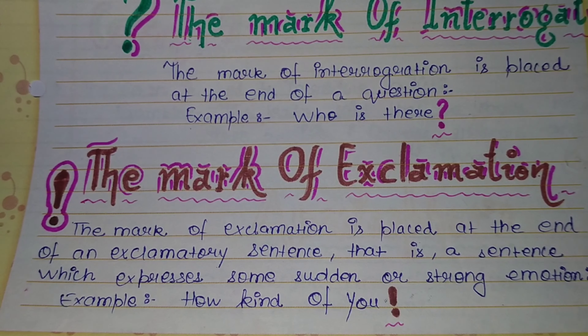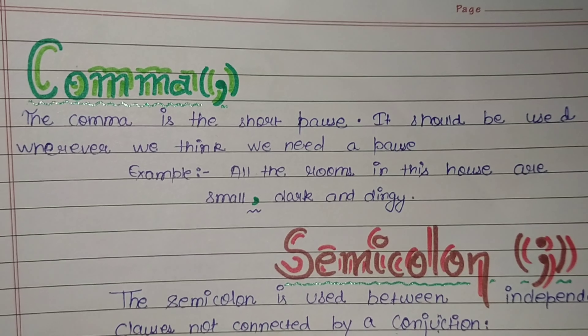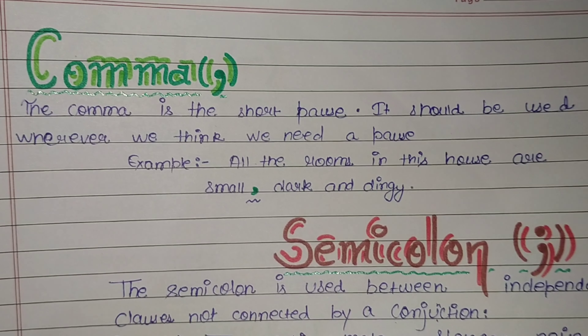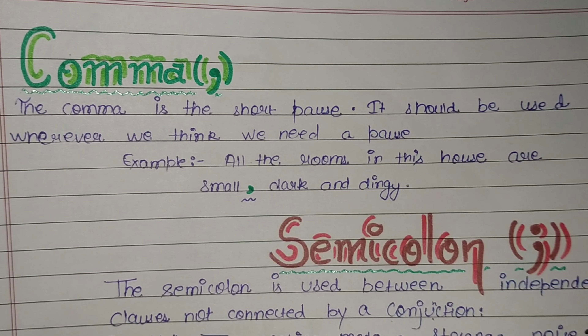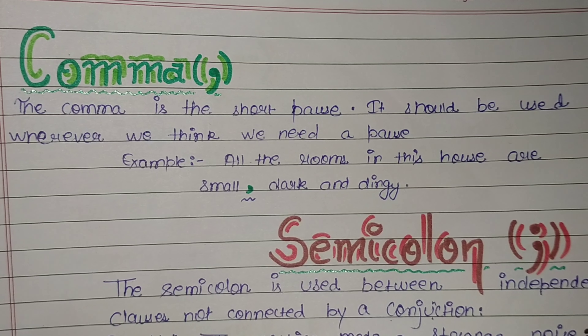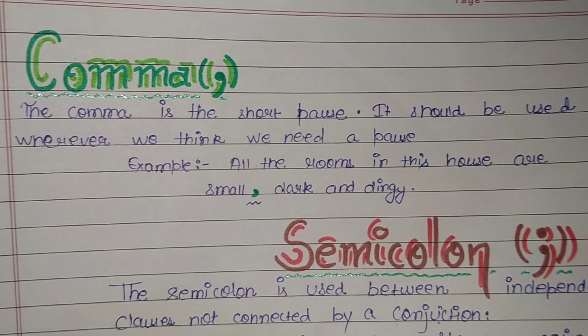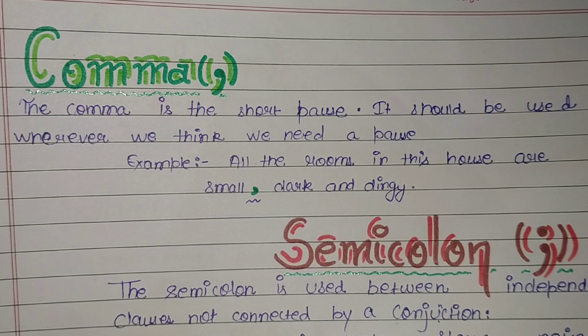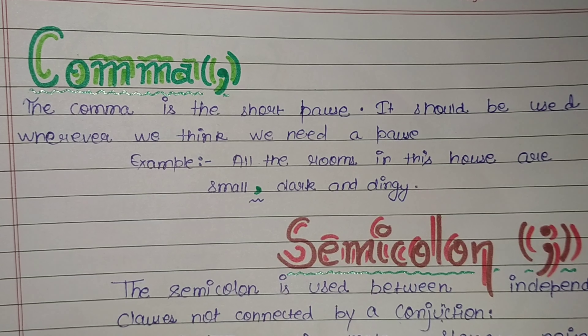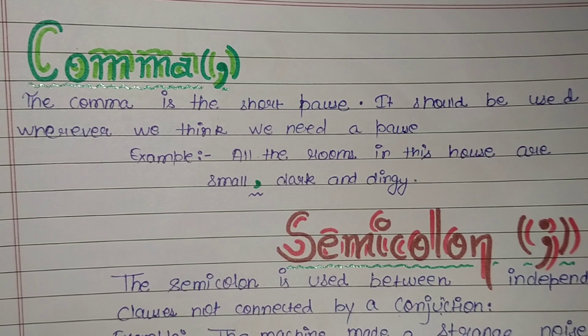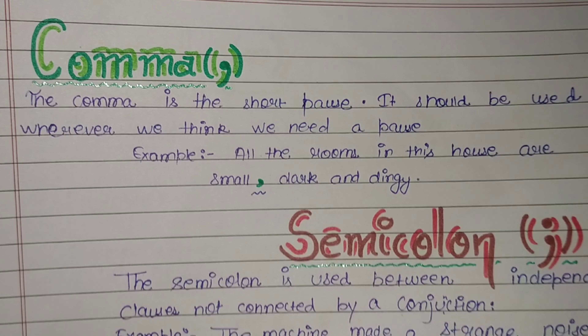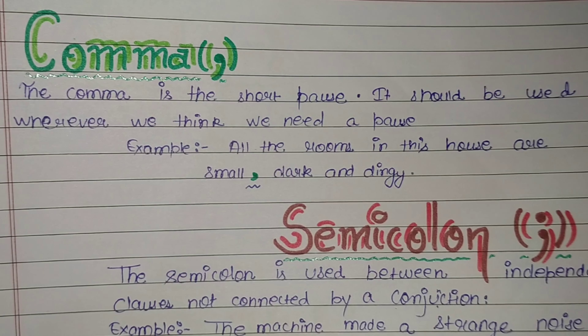The fourth one is the comma. The comma is a short pause; it should be used wherever we think we need a pause. Example: 'All the rooms in this house are small, dark, and dingy.'